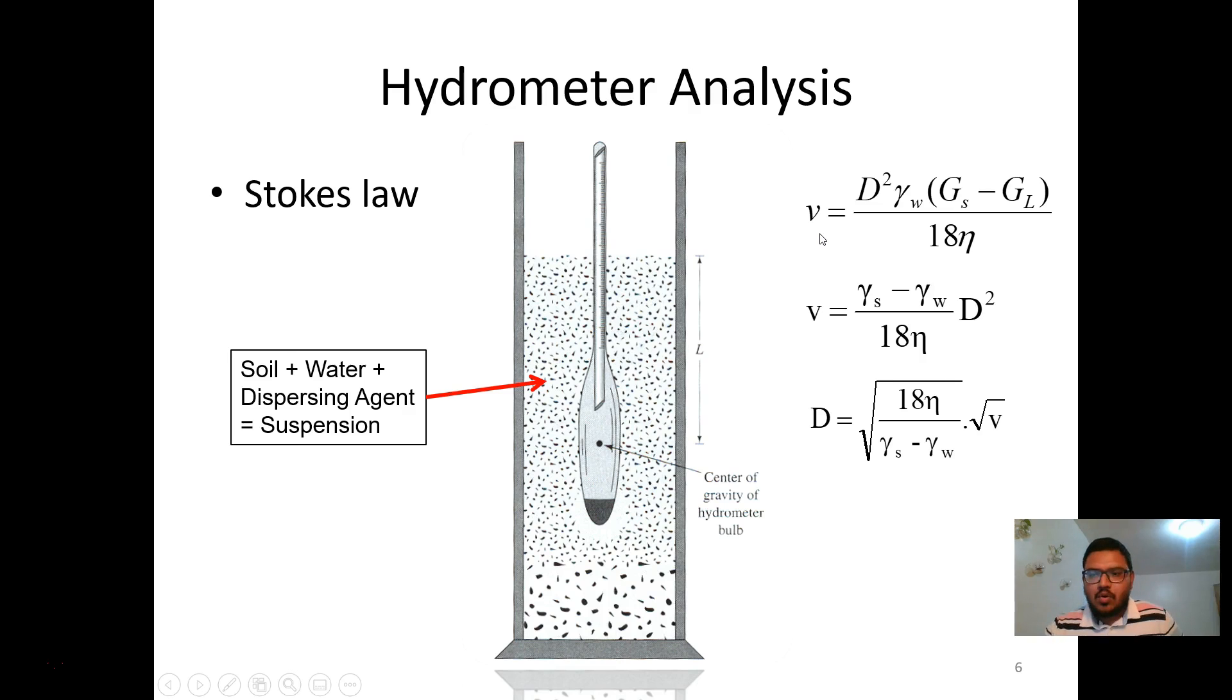If we know the velocity, that means travel length divided by the required time, then we can determine the particle diameter. Hydrometer is such a device which readings can show how much soil particles are moving downward with time.